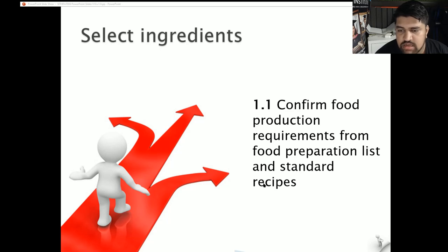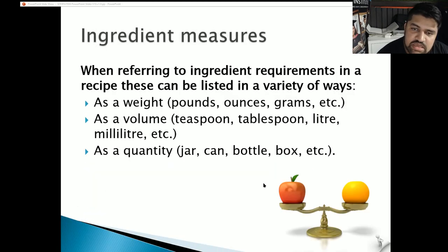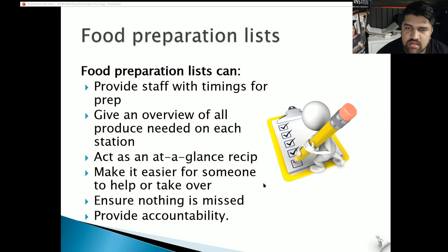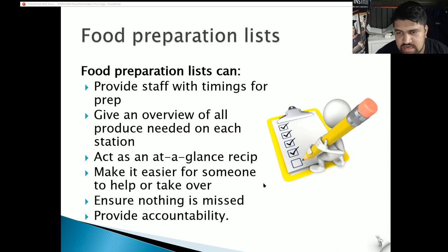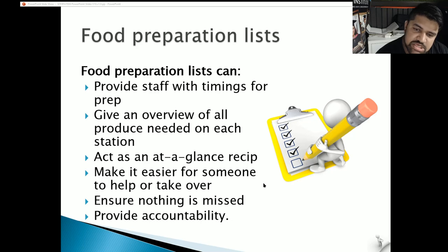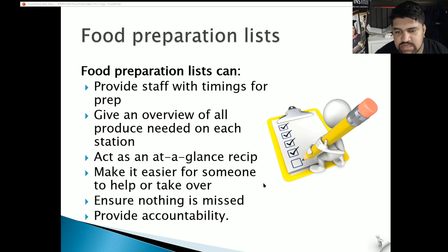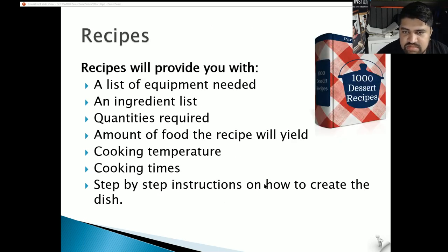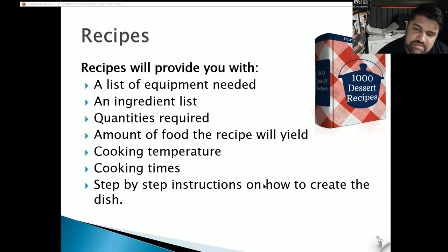Section 1.1: Confirm food production requirements from food preparation lists and standard recipes. A food preparation list can provide staff with timings for prep, give an overview of all produce needed on each station, act as a glance recipe, make it easier for someone to help or take over, ensure nothing is missed, and provide accountability for the team. Recipes provide a list of equipment needed, an ingredient list, quantities required, the yield, cooking temperatures, cooking times, and step-by-step instructions on how to create and present the dish.